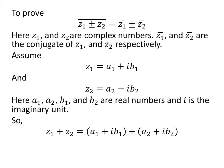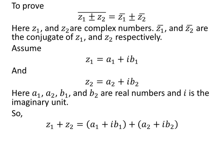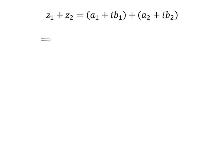So, z1 plus z2 is equal to a1 plus i times b1 plus a2 plus i times b2. Taking out the common factor i gives us z1 plus z2 is equal to a1 plus a2 plus i times b1 plus b2.